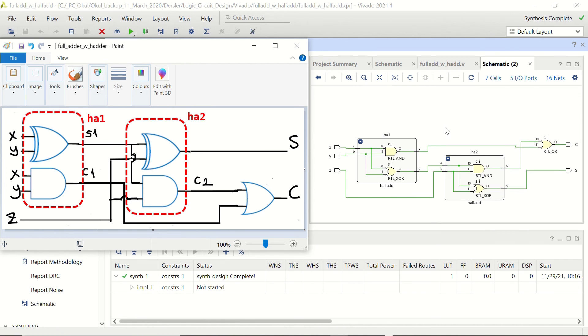But our connections are totally fine. You can see that we have the inputs X, Y, and Z. And in between the carry is going from the HA1 to our OR. And also our SUM output is obtained from the XOR of HA2. So all the inputs, outputs, and the wires are the same.